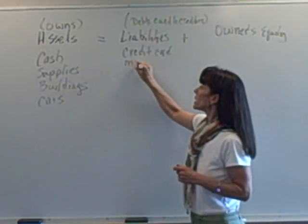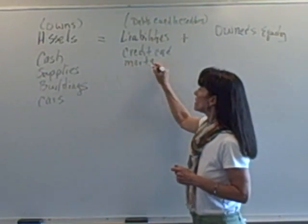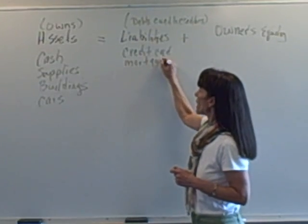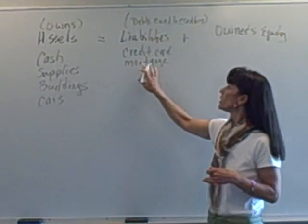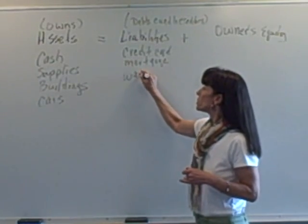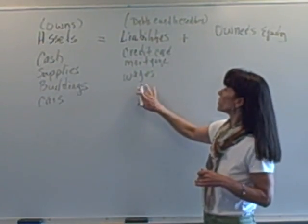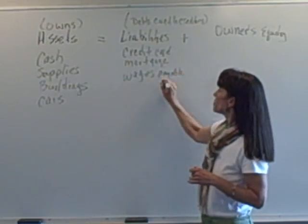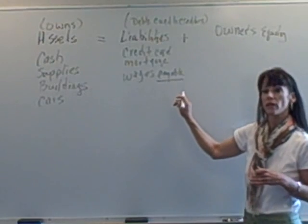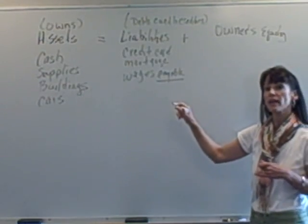We can think of a mortgage. If they bought this building over here, which was our asset, but they used a mortgage to buy it, that would be a liability. Wages that are owed to employees would be considered a debt, so wages payable. Now many times liabilities have the word payable on the end of it indicating that it is a liability.